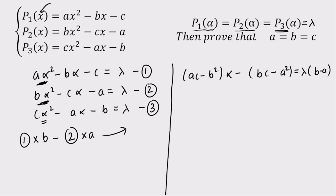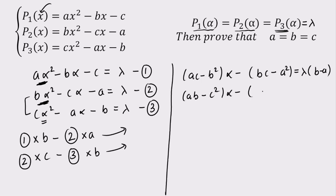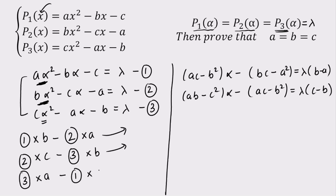To eliminate alpha² from equations 2 and 3, I multiply equation 2 by C and equation 3 by B. The result is: (AB − C²)·alpha − (AC − B²) = lambda·(C − B). For the third elimination, from equations 3 and 1, I multiply equation 3 by A and equation 1 by C, giving: (BC − A²)·alpha − (AB − C²) = lambda·(A − C).